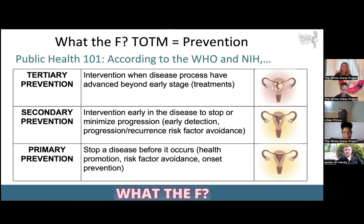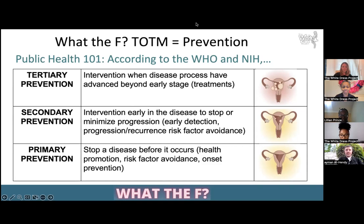Every month we have a term of the month, and this month our term is prevention. First, tertiary prevention is usually what we talk about given knowledge of fibroids. Prevention research usually encompasses both primary and secondary research. Secondary is intervention early in the disease to stop or minimize progression — also talked about as early detection, screening, and treatment opportunities for fibroids research. Primary prevention includes research designed to promote health and identify risk factors for developing a new health condition, to stop a disease before it occurs — health promotion, risk factors, avoidance, onset, and prevention.